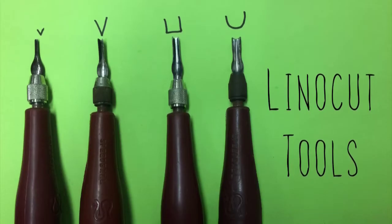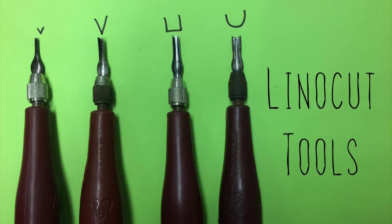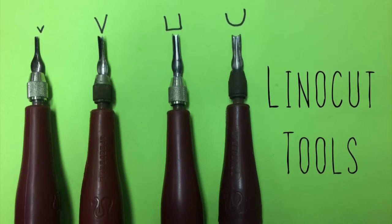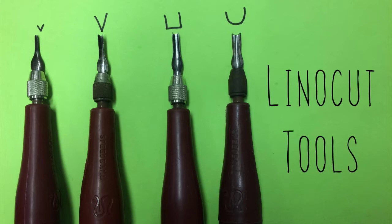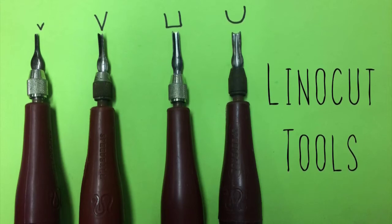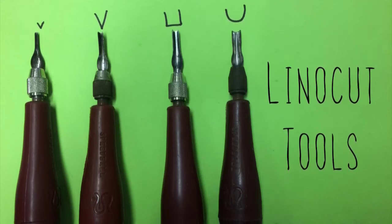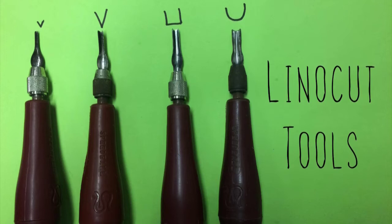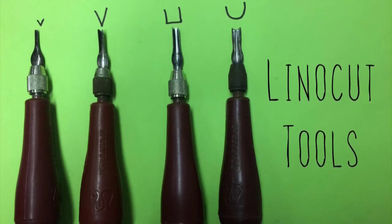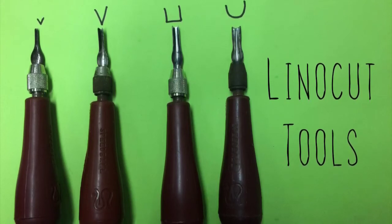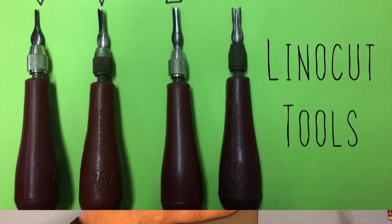The blades on the lino cut tools come in different shapes and sizes. The tiny V on the left is really great for fine lines and details. But if you have a big open space you need to carve away, the square or the U-shaped blade is probably your better bet. Choosing the right tool is really important and these are decisions you're going to have to make along the way as you get working on your project.